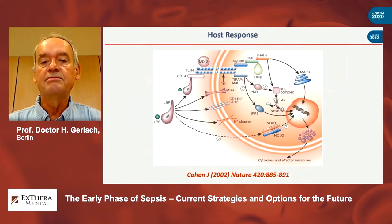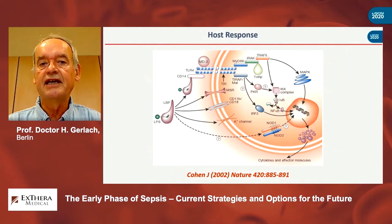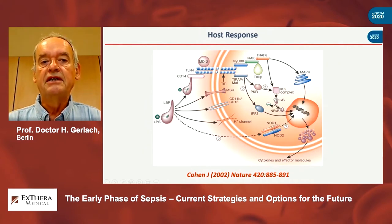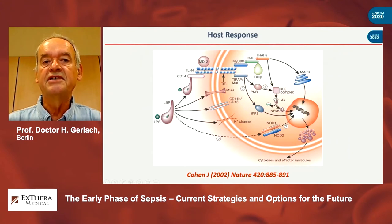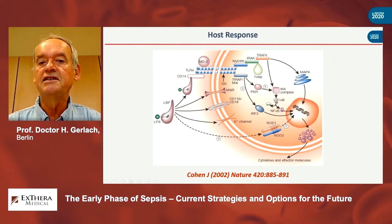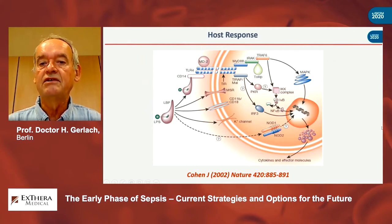This host response is very complicated, and this is only a very simplified scheme by which this can be demonstrated. In the beginning, you have so-called PAMPs — molecular patterns from the pathogen — which then hit receptors like the Toll-like receptors (TLR), and then you have the signal transduction within the host response cell, which finally produces cytokines and other effector molecules.